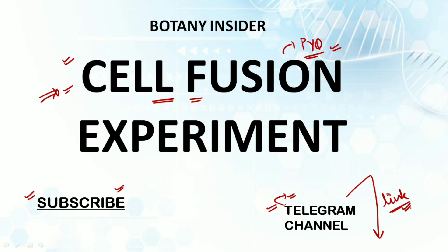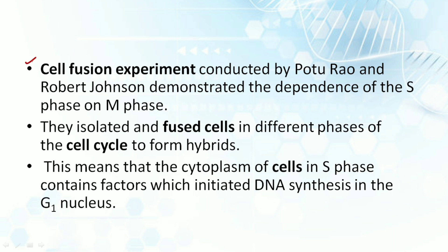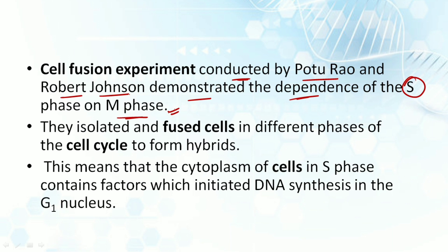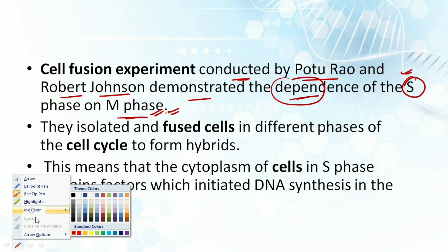Let's understand the cell fusion experiment now. You need not go into the depth of this — all you have to remember is what the cell fusion experiment is all about and how it actually functions. There are two main conclusions. The experiment was conducted by two scientists, including Robert Johnson, and they demonstrated the dependence of the S phase on the M phase.